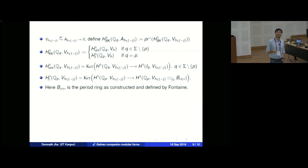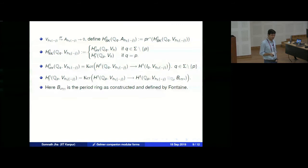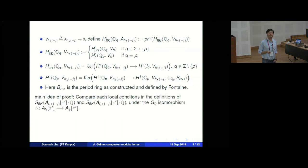That is the Bloch-Kato Selmer group. This explains the notation in the theorem statement. For example, if it is an elliptic curve with good ordinary reduction, it will coincide with the usual Selmer group of the elliptic curve. The main idea of the proof, as in Mazur-Rubin, is to compare the local conditions in the definitions of the two Bloch-Kato Selmer groups under the G_Q-isomorphism from A_{f_1}[π^r] to A_{f_2}[π^r].